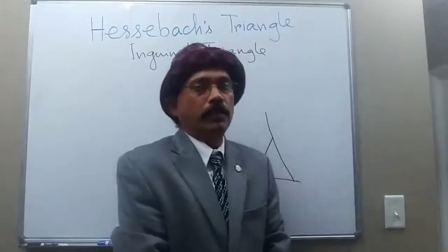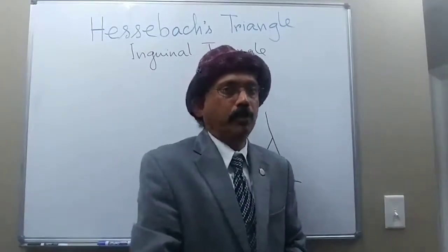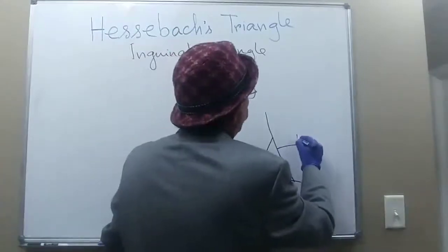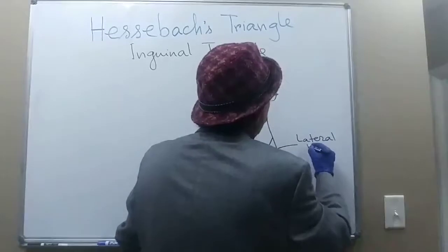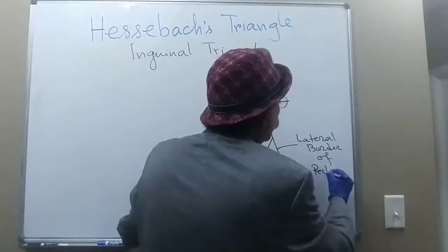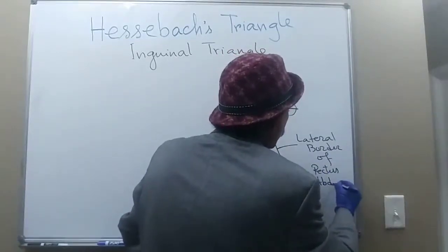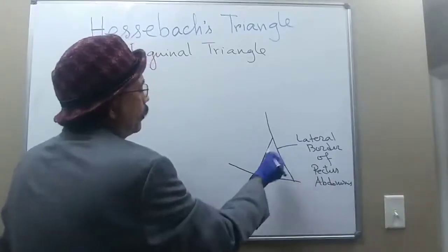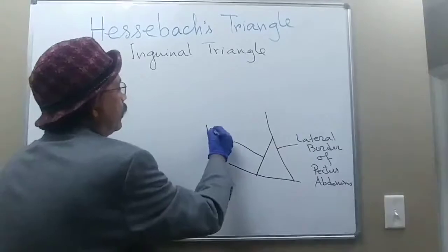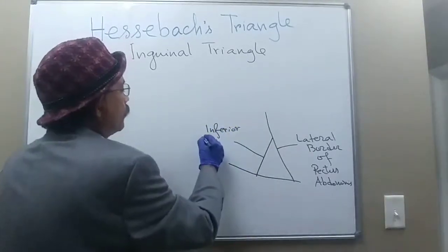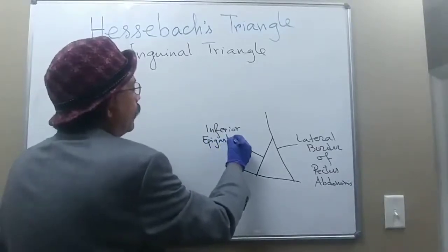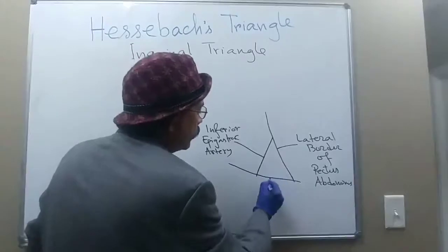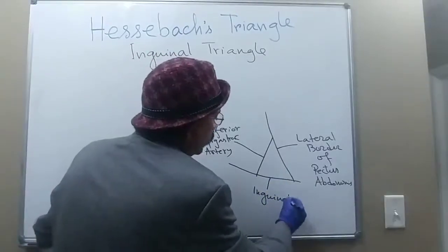This is a triangular space in the anterior abdominal wall on the medial and lower part. It is bounded medially by the lateral border of the rectus abdominis, laterally by the inferior epigastric artery, and below by the inguinal ligament.